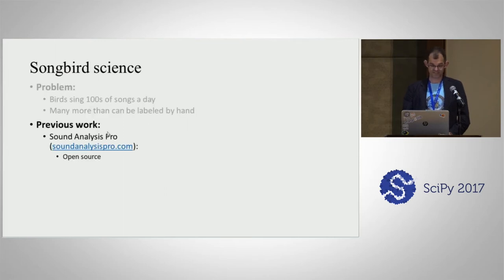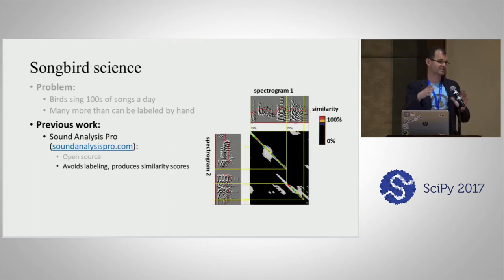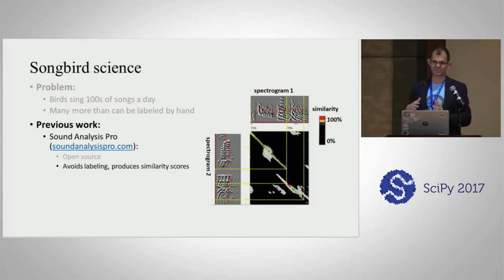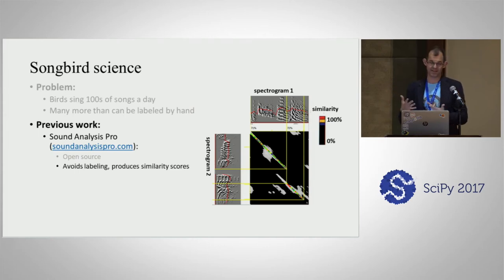People have tried to address this in different ways. Sound Analysis Pro is a really important piece of open-source software in our field that's driven the field forward. But it avoids labeling — it's mostly used to give similarity scores. You line up some spectrograms, take a cross-correlation of whatever features you're looking at, and that spits out a similarity score, letting you say how similar the tutor's song is to the juvenile that learned from it.